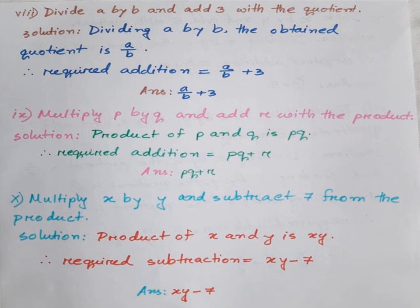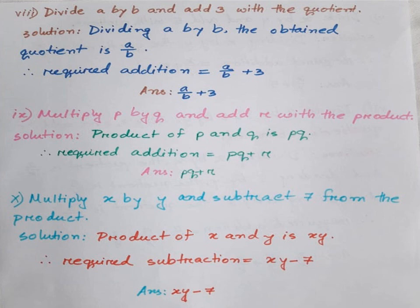Number 9: Multiply P by Q and add R with the product. Solution: Product of P and Q is P into Q, that is PQ. Therefore, the required addition is equal to PQ plus R. Answer: PQ plus R. Number 10: Multiply X by Y and subtract 7 from the product. Solution: Product of X and Y is XY. Therefore, the required subtraction is equal to XY minus 7. Answer: XY minus 7.